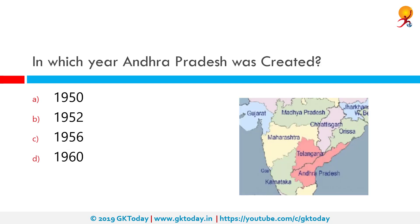In which year was Andhra Pradesh created? The correct answer is 1956. The Congress in its Jaipur session appointed a three-member committee, popularly known as the JVP Committee after its leaders Jawaharlal Nehru, Vallabhbhai Patel and Pattabhi Sitaramayya. The committee rejected language as the basis for reorganization of states. Potti Sriramulu, one of the activists demanding the formation of a Telugu-majority state, died on 16 December 1952 after undertaking a fast unto death. This resulted in the creation of the first state on a linguistic basis for Telugu-speaking people, called Andhra State, on October 1, 1953. It was later reorganized as Andhra Pradesh in 1956.